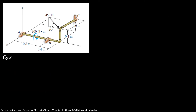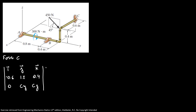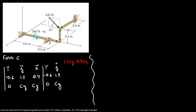Now we're going to do the moment for force C. I set up the I, J, K matrix with the distance row minus 0.6, 1.2, 0.4 and the force row 0, CY, CZ. Solving the determinant gives us 1.2 CZ minus 0.4 CY in the I direction, 0.6 CZ in the J direction, and minus 0.6 CY in the K direction.